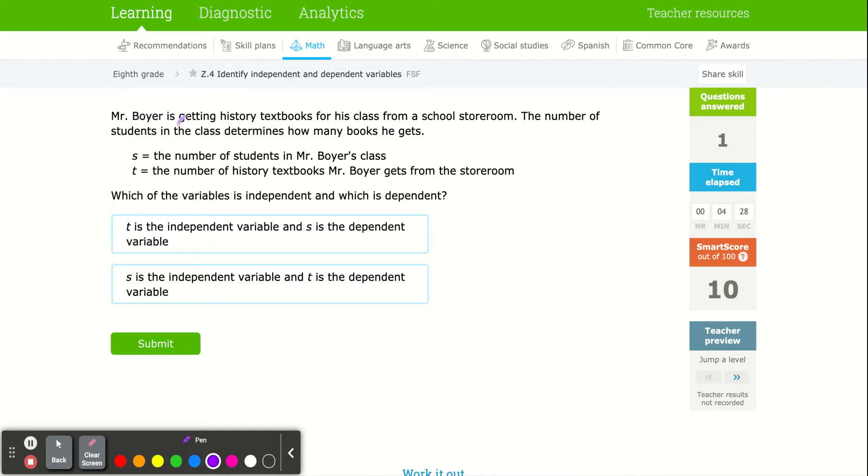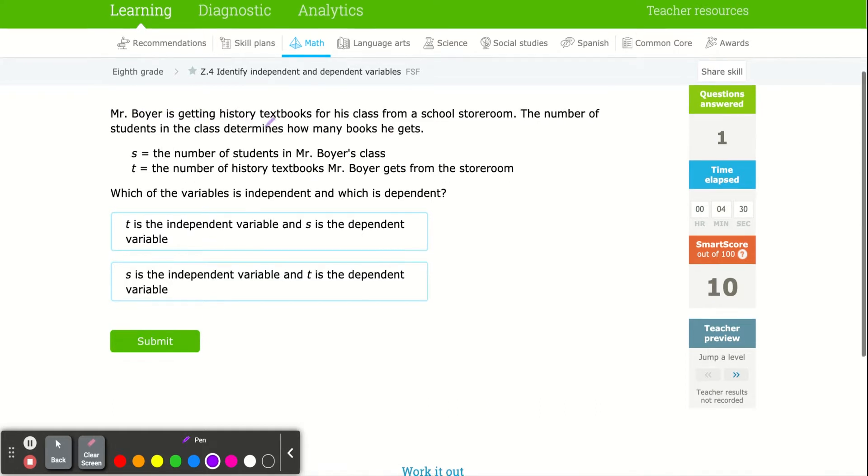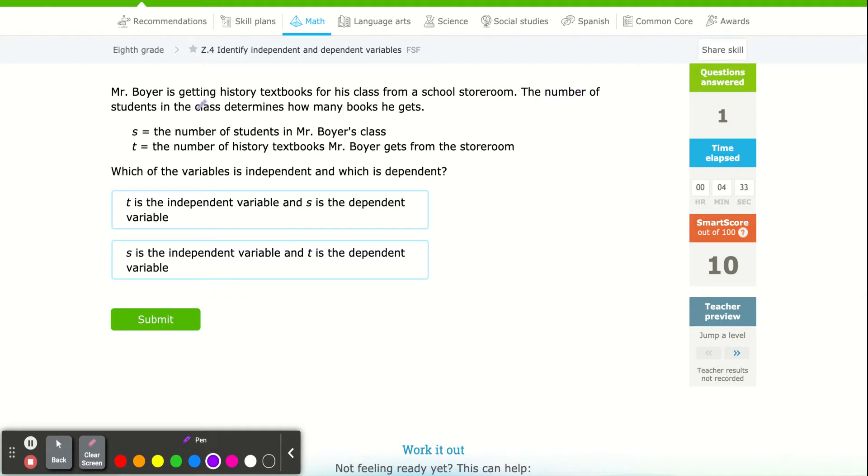Mr. Boyer is getting history textbooks for his class from a school storeroom. The number of students in the classroom will determine the number of books, right? If he only has three people in the classroom or three students, is he going to need 30 books or three books? So S now here represents the number of students, which he has no control over.